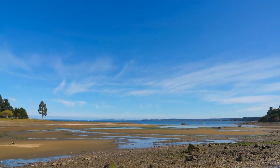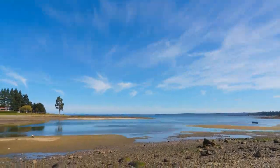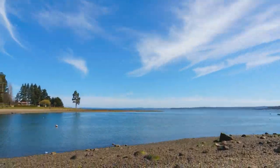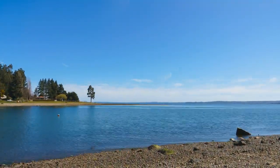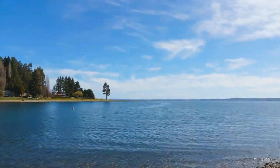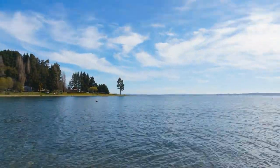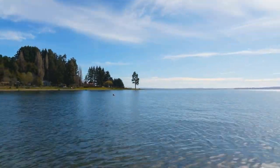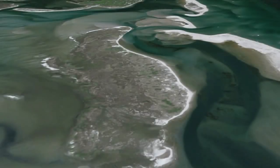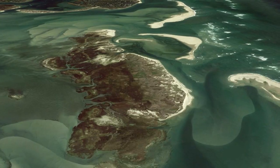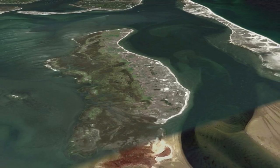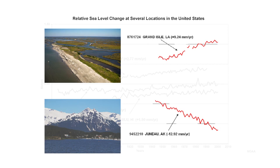Coastal zones are also highly dynamic areas regularly in flux. Shorelines ebb and flow with the tides, barrier islands morph from storms, and local water levels rise or fall as land shifts and the climate changes.